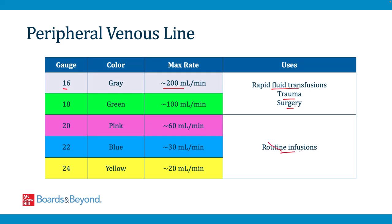Larger 16- and 18-gauge IVs are used for rapid fluid transfusions and are commonly used in cases of trauma, surgery, and GI bleeds. Smaller IVs can be used for routine medical care or infusions. Catheters are color-coded to signify size: 16-gauge IVs are gray, 18-gauge are green, 20-gauge are pink, 22-gauge are blue, and 24-gauge are yellow.